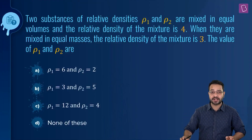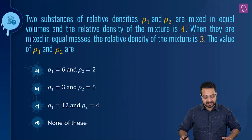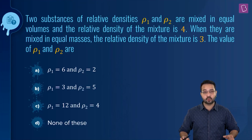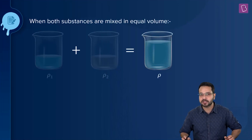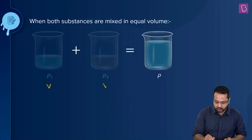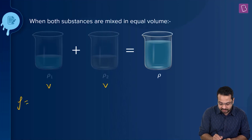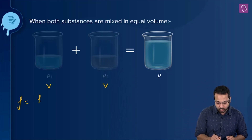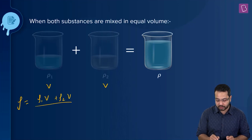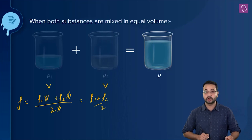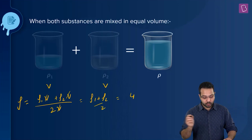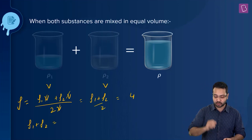Two substances of relative densities ρ1 and ρ2 are mixed in equal volumes, and the relative density of the mixture is 4. When mixed in equal masses, the relative density is 3. For the equal volume case, if each liquid has volume V, the mixture density is (ρ1·V + ρ2·V) / 2V = (ρ1 + ρ2) / 2 = 4, giving us the first equation: ρ1 + ρ2 = 8.